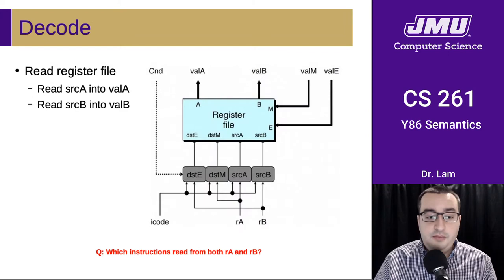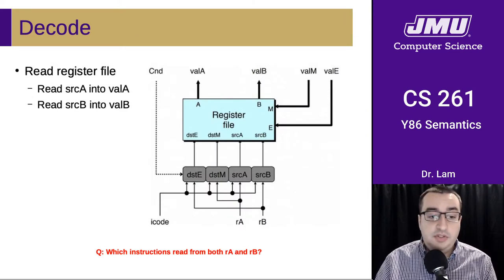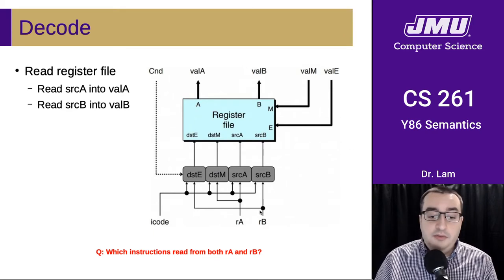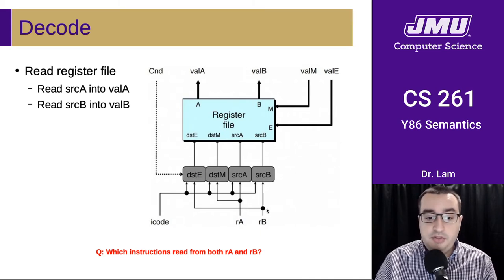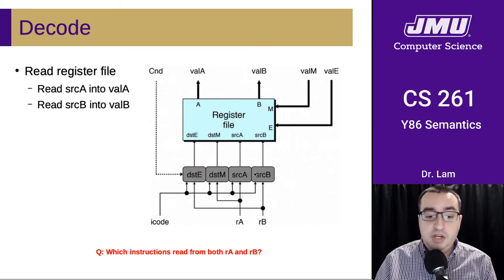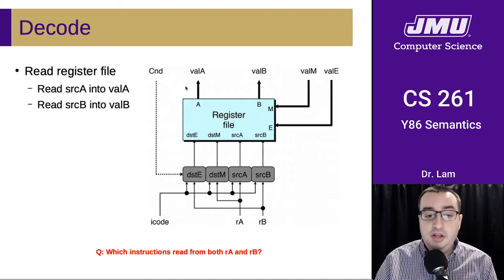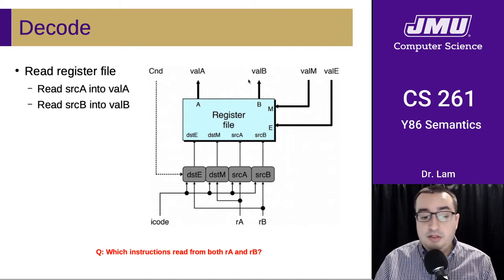Now we have all of this information, and some of it gets fed into the next phase, which is the decode phase. Here we're going to be reading from a register file. The parts of interest at this point are the reads: RA, RB, and the iCode come in, then two little pieces of logic figure out which registers we need and pass those numbers through to the register file.